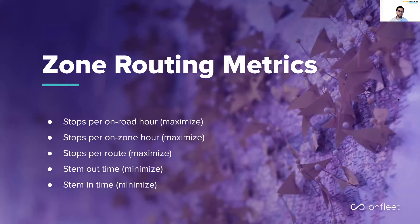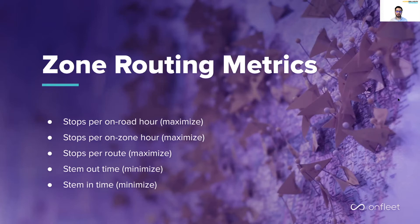Zones provide many reporting benefits too. Route metrics like stops per on-road hour, which we want to maximize; stops per on-zone hour, also maximize; stops per route, of course, we want to maximize; the stem out time, which we'd like to minimize — this is the time from the fulfillment center or the depot out to the zone — and the stem in time, the time from the zone back to the depot, which we want to minimize.